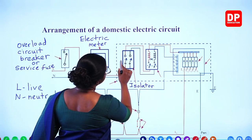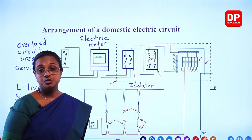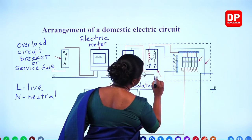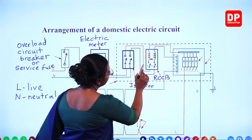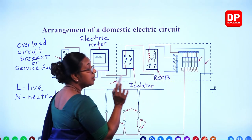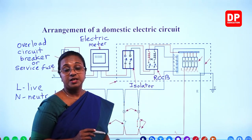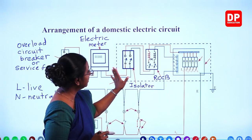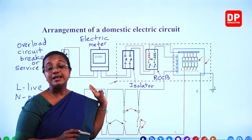From the isolator, the wire connection goes to the next component: the trip switch or RCCB — residual current circuit breaker. Here also, both the brown live wire and blue neutral wire are connected, and both can be disconnected by the trip switch. So the isolator and RCCB are both dual pole switches, which disconnect both live and neutral wires simultaneously — different from the overload circuit breaker.